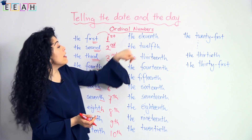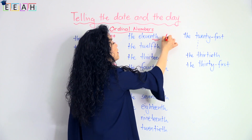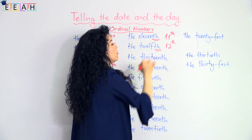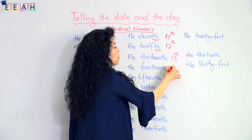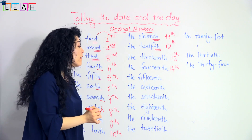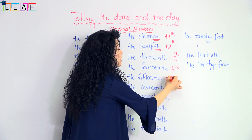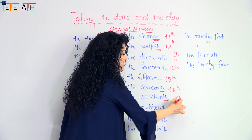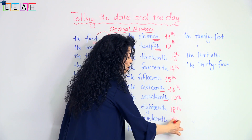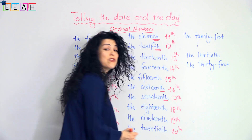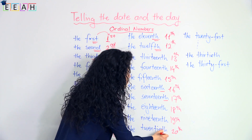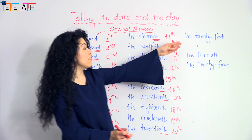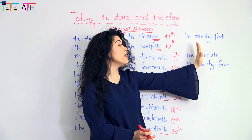The eleventh, the twelfth, thirteenth, fourteenth, fifteenth — it continues the same way: seventeenth, eighteenth, nineteenth, and twentieth. After the twentieth we have the twenty-first, the twenty-second, the twenty-third, and it continues that way.